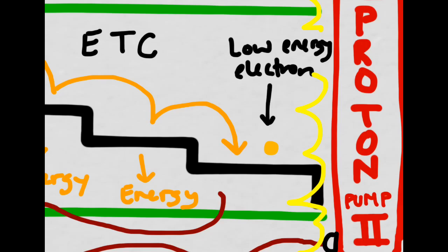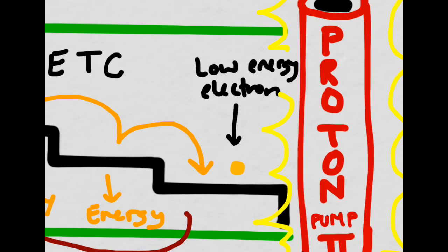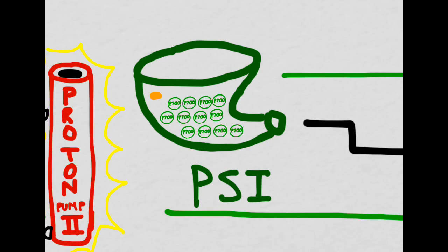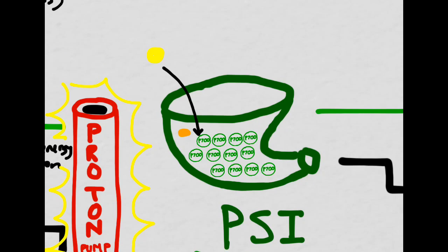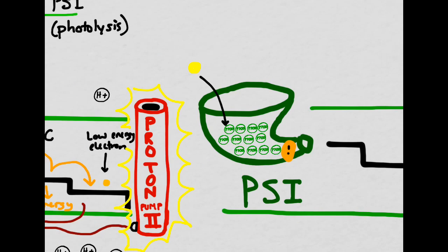We aren't done with this low-energy electron — it still has more work to do. While the proton pump is working hard next door, the low-energy electron is carried over to PS1. This is where we see the second part of a photon's job: the photon will re-energize the electrons in photosystem 1. The electron will be transformed back into its excited state and will then enter the electron transport chain again. Notice that in photosystem 1, a different pigment is used — P700 instead of P680.